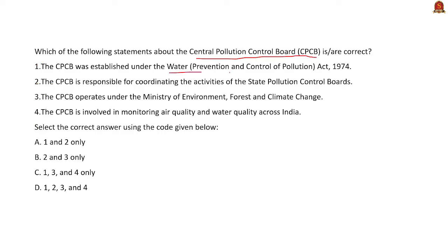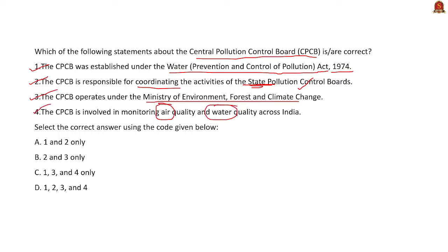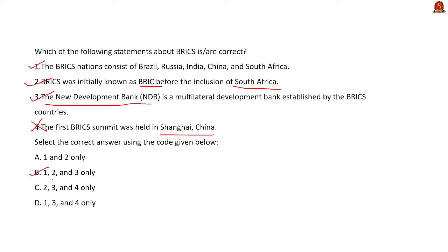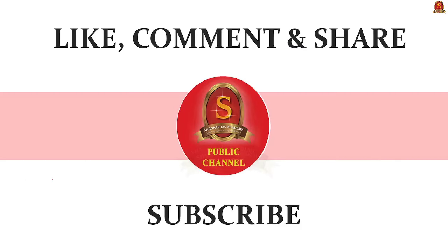Question 3 — about the Central Pollution Control Board: Statement 1 — CPCB was established under the Water (Prevention and Control of Pollution) Act, 1974 — correct. Statement 2 — CPCB is responsible for coordinating activities of State Pollution Control Boards — correct. Statement 3 — CPCB operates under the Ministry of Environment, Forest and Climate Change — correct. Statement 4 — CPCB is involved in monitoring air and water quality across India — correct. The correct answer is option D — all statements are correct.